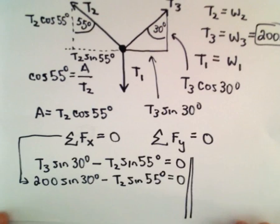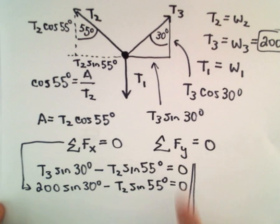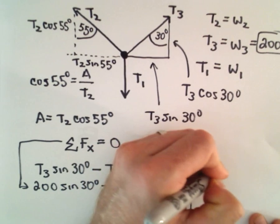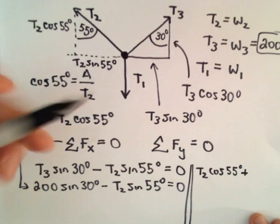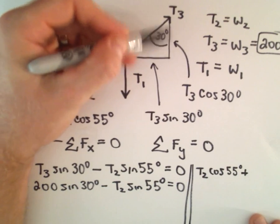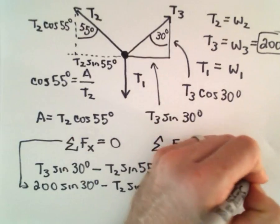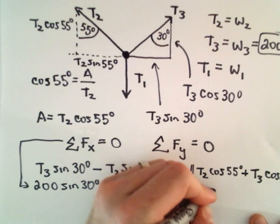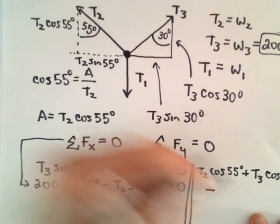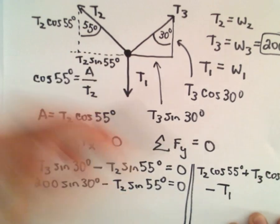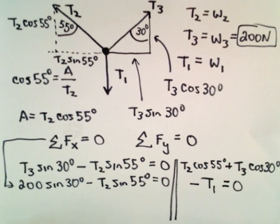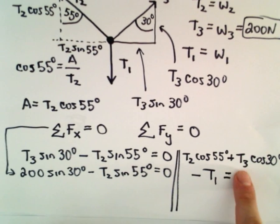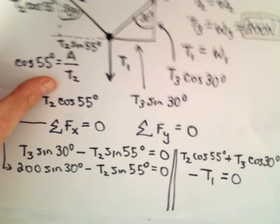And if we set up our other equation, if we look at the vertical forces, in this case we could take T2 times cosine of 55 degrees, plus we would have to add the other vertical component. They're acting in the same direction. So we would have T3 times cosine of 30 degrees. But then we would have to subtract away the tension T1. So that'll equal zero. And now we've got everything we need to solve our problem. We could substitute in the fact that T3 is 200.